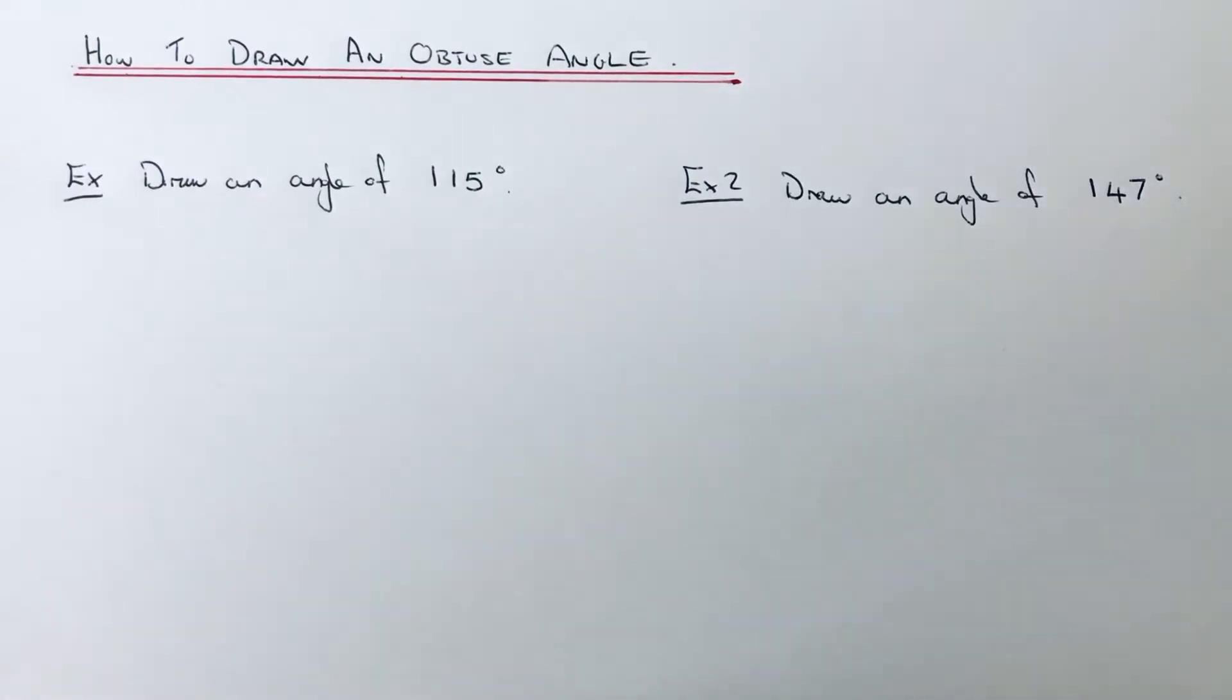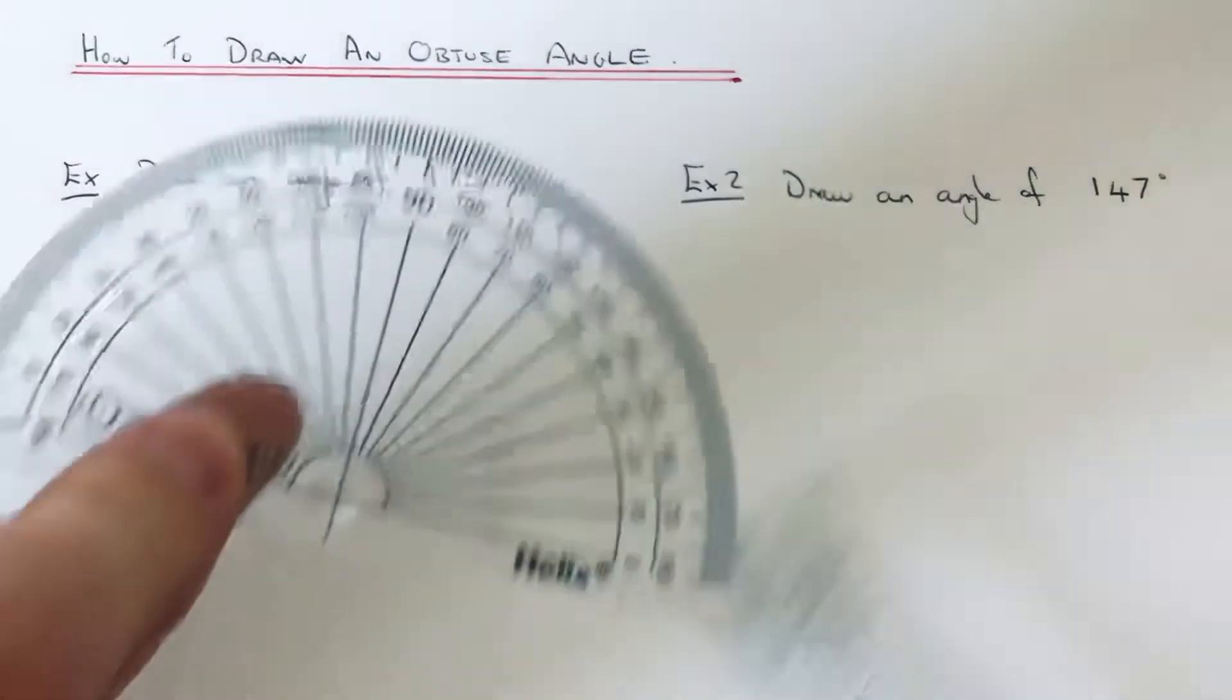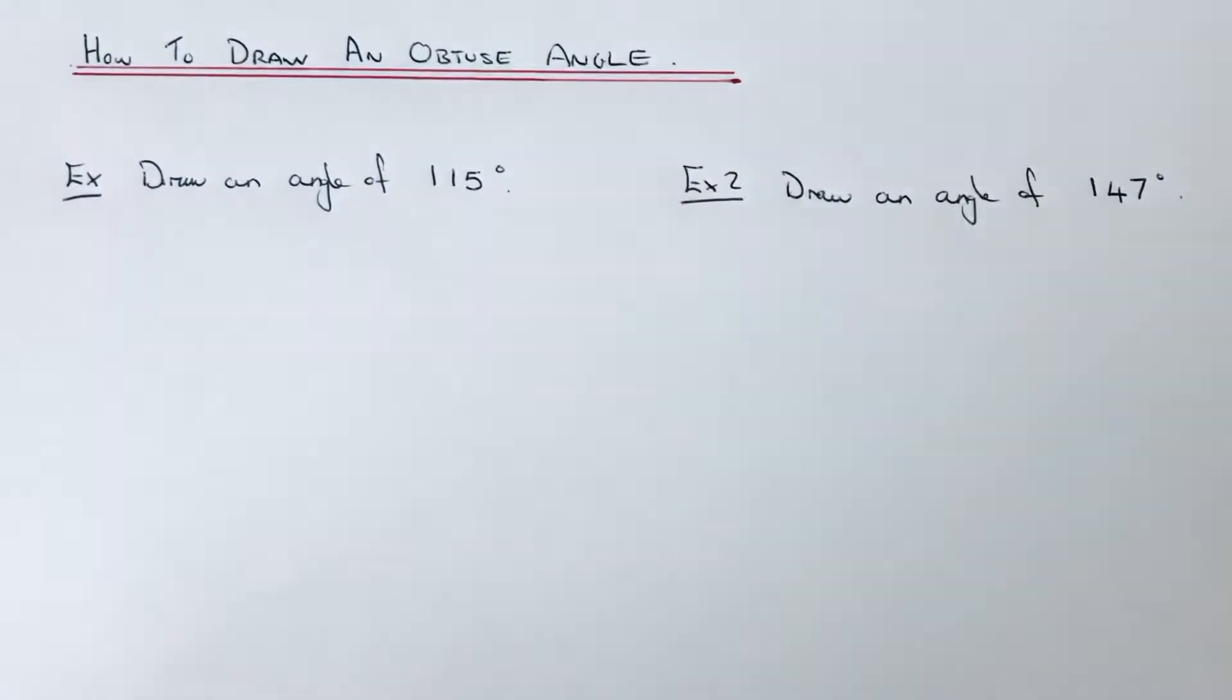Hi guys, welcome back. This is Maths 3000. Today I'm going to show you how to draw an obtuse angle. Now, an obtuse angle is an angle which is bigger than 90 degrees but less than 180 degrees.